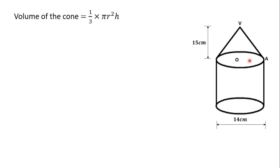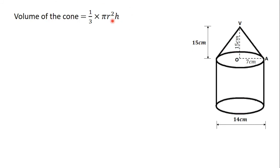If point O is the center of the circular base of the cone and A is a point on the circular base, the line OA is the radius of the cone. Since the diameter of the cone is 14 centimeters, the radius of the cone is 14 ÷ 2 = 7 centimeters. The height of the cone, from the center to the vertex, is 15 centimeters. So radius = 7 cm and height = 15 cm.